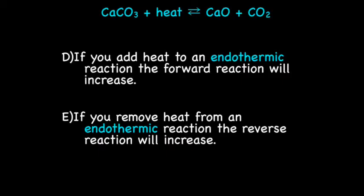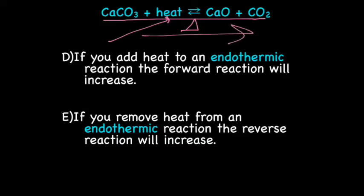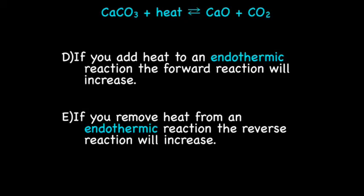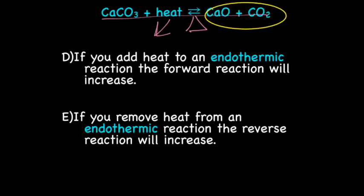For an endothermic reaction, if you add heat, you're adding it to the reactant side, so the reactant side gets heavier, and the reaction goes in the forward direction — you start making more product to balance things out. If you remove heat from an endothermic reaction, the reactant side becomes lighter, which makes the product side heavier, so the reaction goes in the reverse direction towards the reactants.